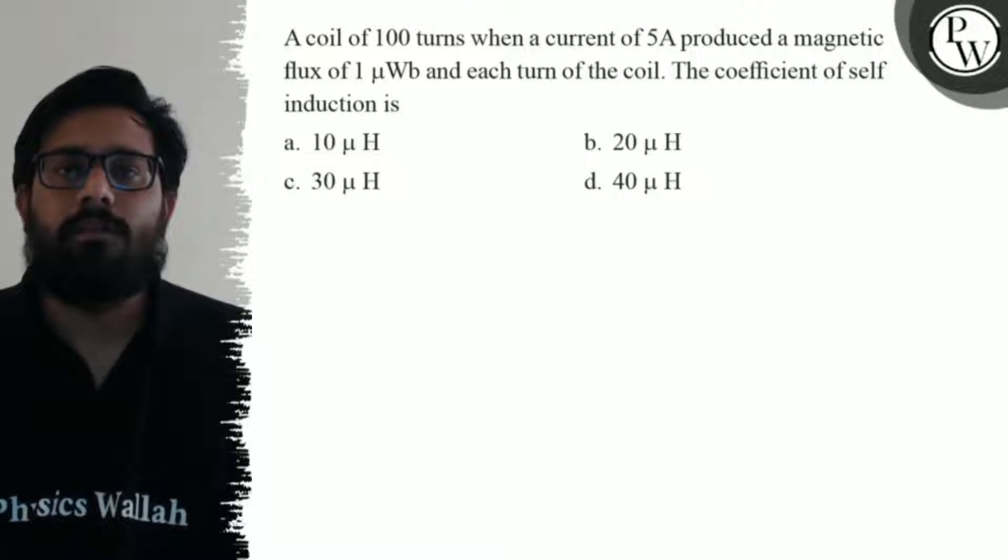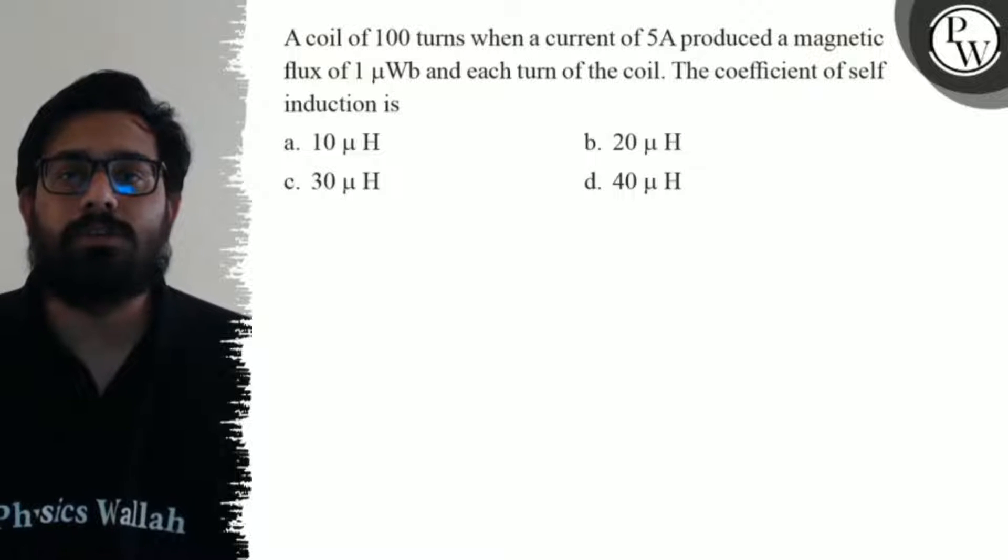A coil of 100 turns when a current of 5 ampere produced a magnetic flux of 1 microweber and each turn of the coil.